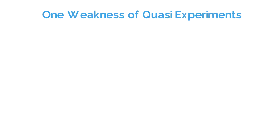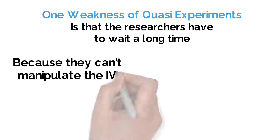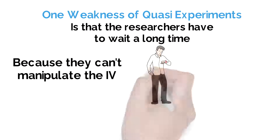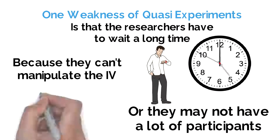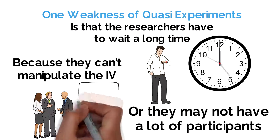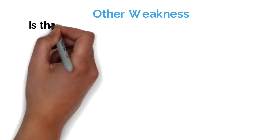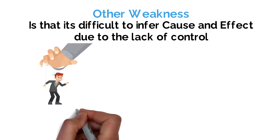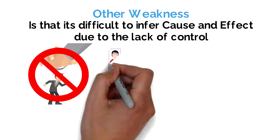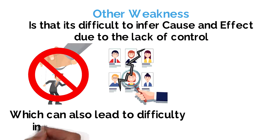One weakness of quasi-experiments is that the researcher has to wait for the conditions to happen naturally, because they are not allowed to manipulate the independent variable, which could mean they have to wait a long time or may not have very many participants, and therefore the sample may not be representative of the target population. Another weakness is that it is difficult or impossible to infer cause and effect, due to the lack of control over extraneous variables and no manipulation of the independent variable, which can also lead to difficulty in replicating the study exactly.